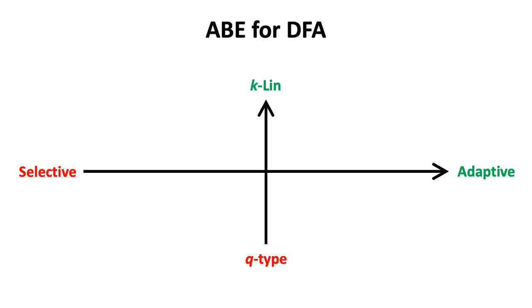In this work, we concern schemes in bilinear groups. The two main assumptions in use are k-linear assumption and q-type assumption.